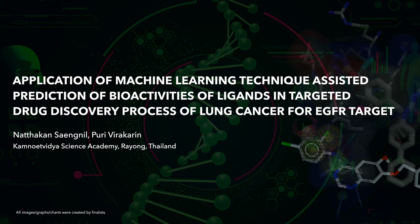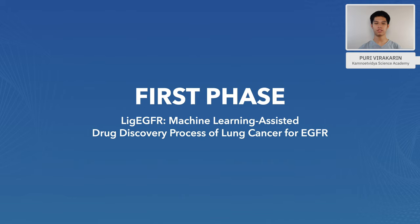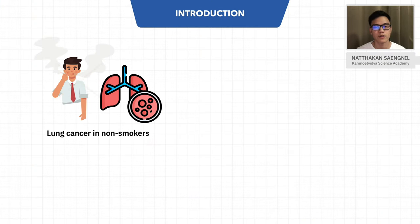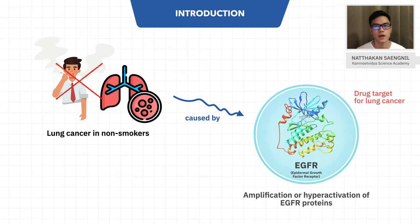Since this is a two-year project, it can be divided into two phases. For the first phase, we focus on lung cancer. Lung cancer in a smoker results from increasing amplification or hyperactivation of the EGFR gene. EGFR acts as a stimulus for sending a signal in cell division. Consequently, a high number of cell divisions occur, which is one of the cancer behaviors.